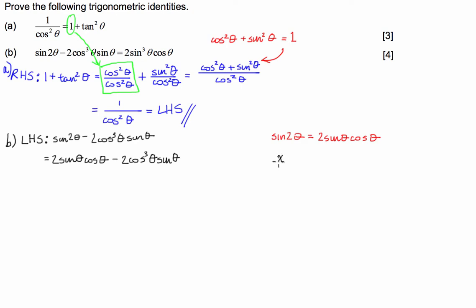Hopefully it'll be obvious that we can factorise this function by 2 sin theta cos theta. And what's going to be inside the bracket is 1 minus, and what do we have left on this side?